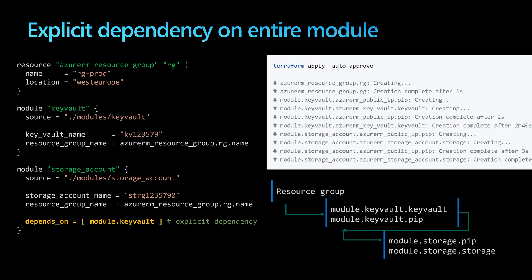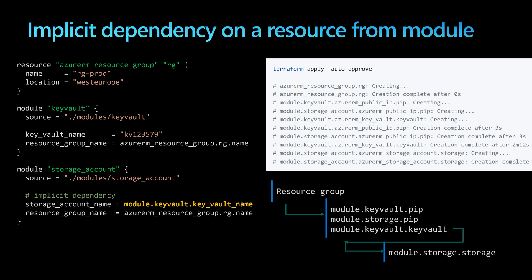From the logs of the Terraform apply command, we'll see that first it creates the resource group, then it creates resources only from the first module — the key vault module — and waits until those resources are finished. Then it creates resources from the second dependent module, which is the storage account module. So these two modules run sequentially because of the explicit depends_on dependency.